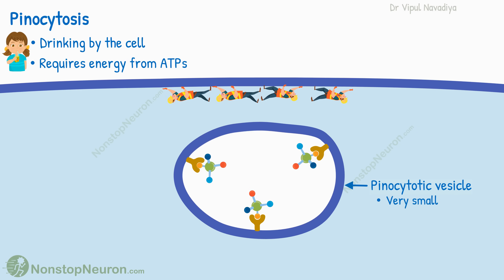The vesicle formed by pinocytosis is called a pinocytotic vesicle. Such vesicles are very small. Pinocytosis occurs in almost all the cells in the body.